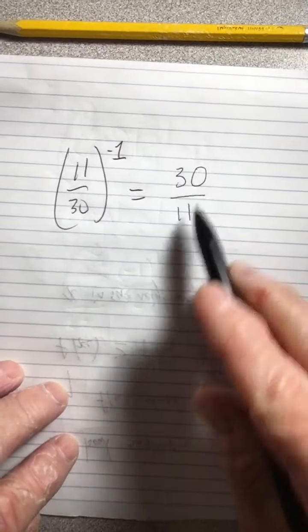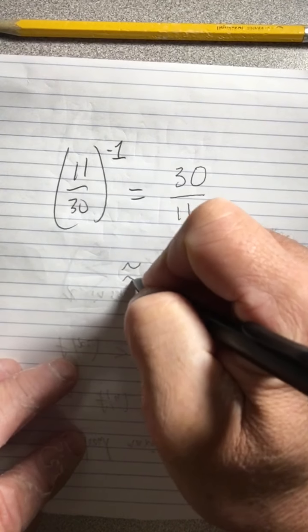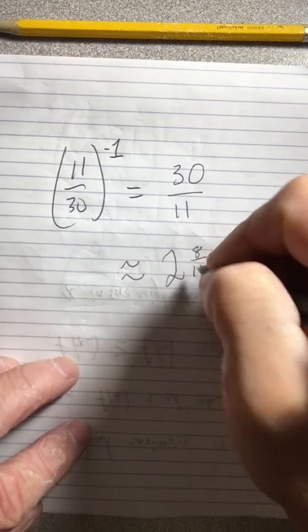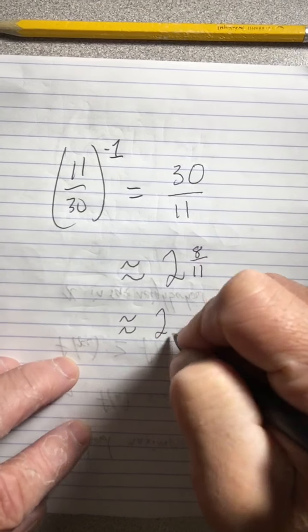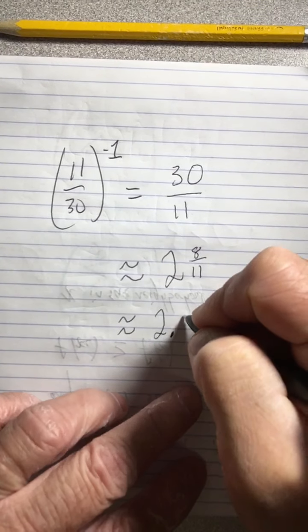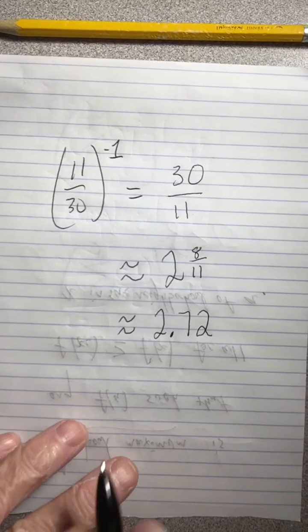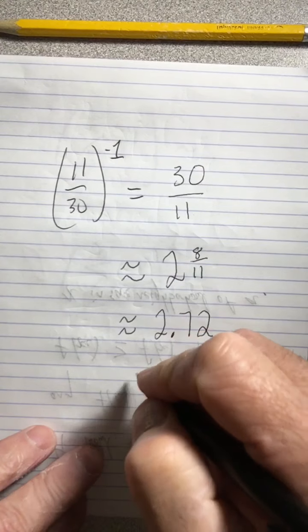Well, 11 goes into 33 three times, so it's close to three. It's 2 and 8/11, which is going to be close to, not exactly of course, but close to 2.72. And this is a fairly good estimate of the actual number we're looking for.